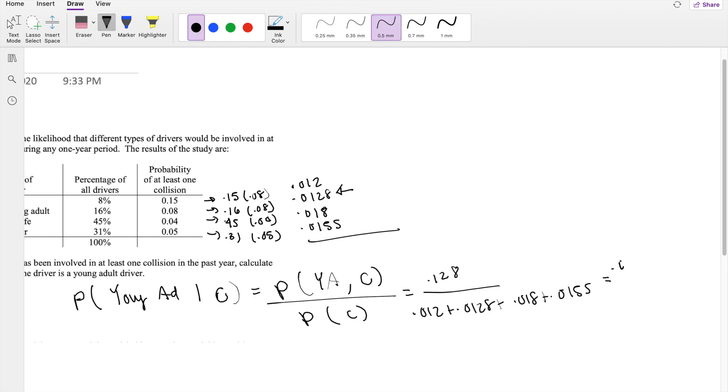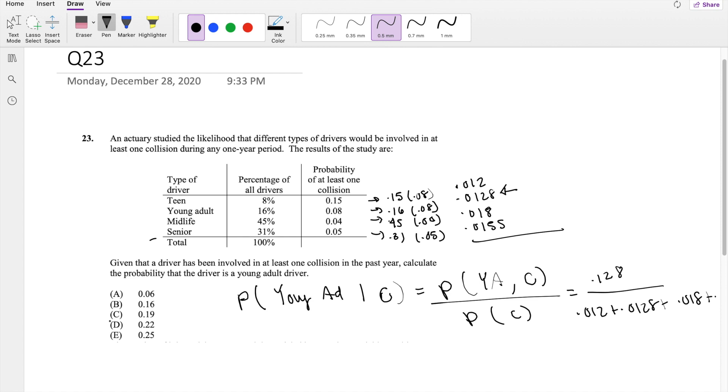So this is equal to 0.0128 divided by 0.0583, which is equal to 0.2195, which is our answer, D, 22%.